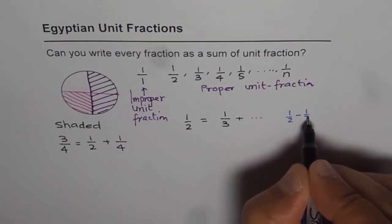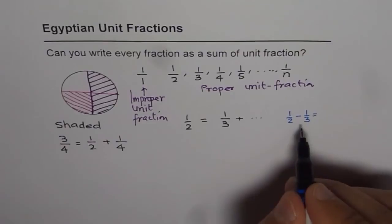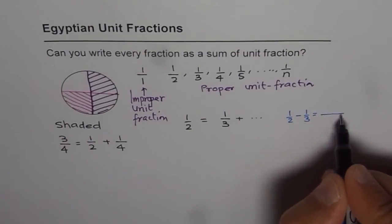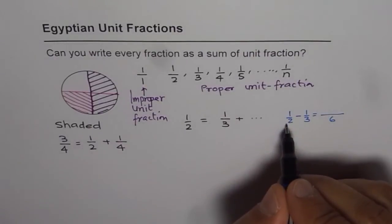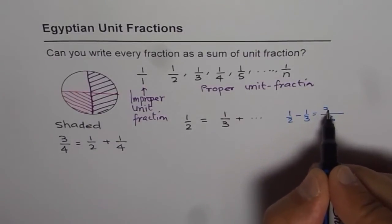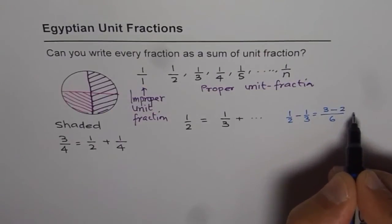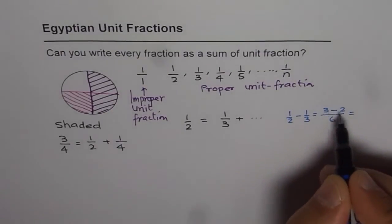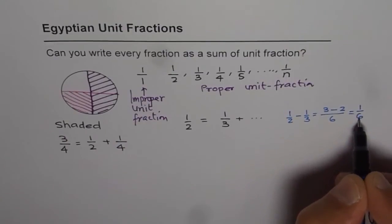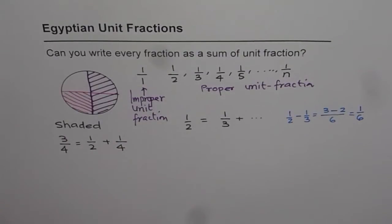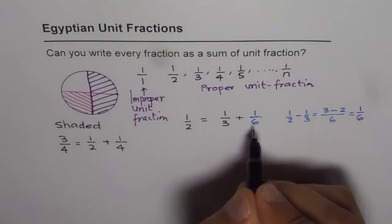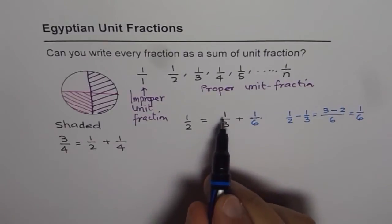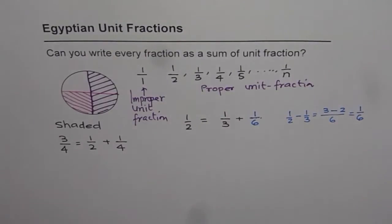What is one-half minus one-third? Taking a common denominator of 6: multiply to get 3 over 6 minus 2 over 6, which gives 1 over 6. That means one-half can be written as one-third plus one-sixth. So I have written a unit fraction as a combination of two unit fractions — that's great!